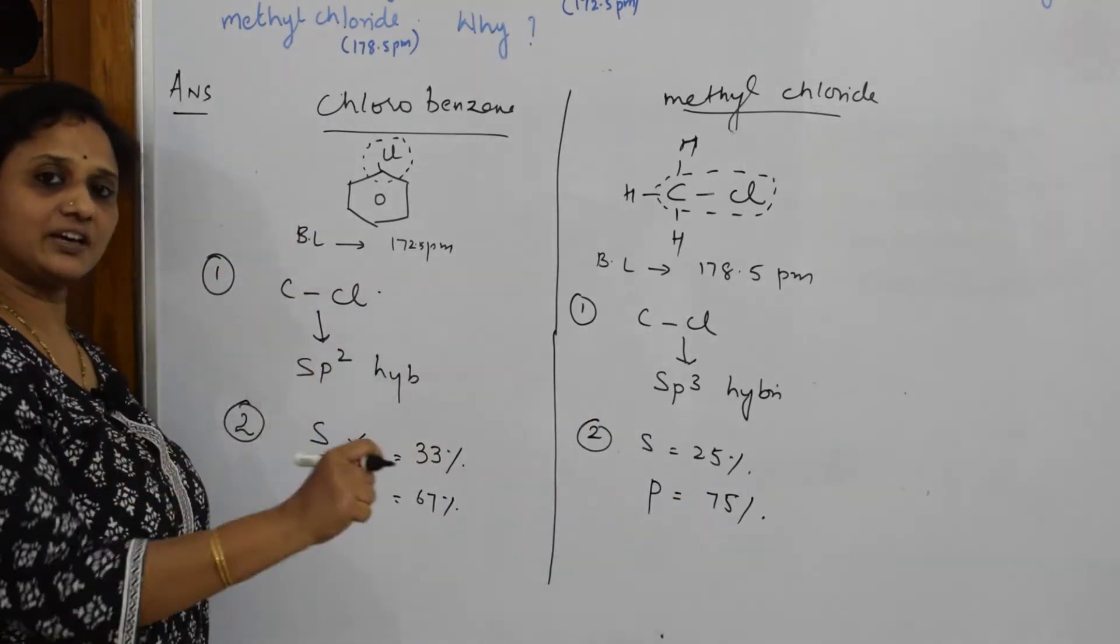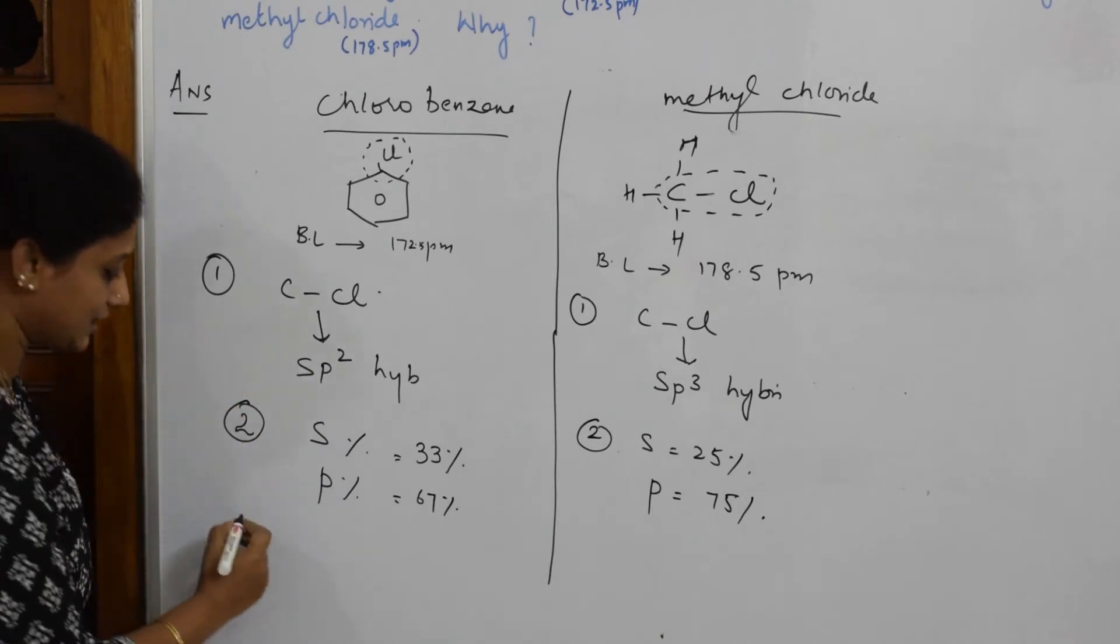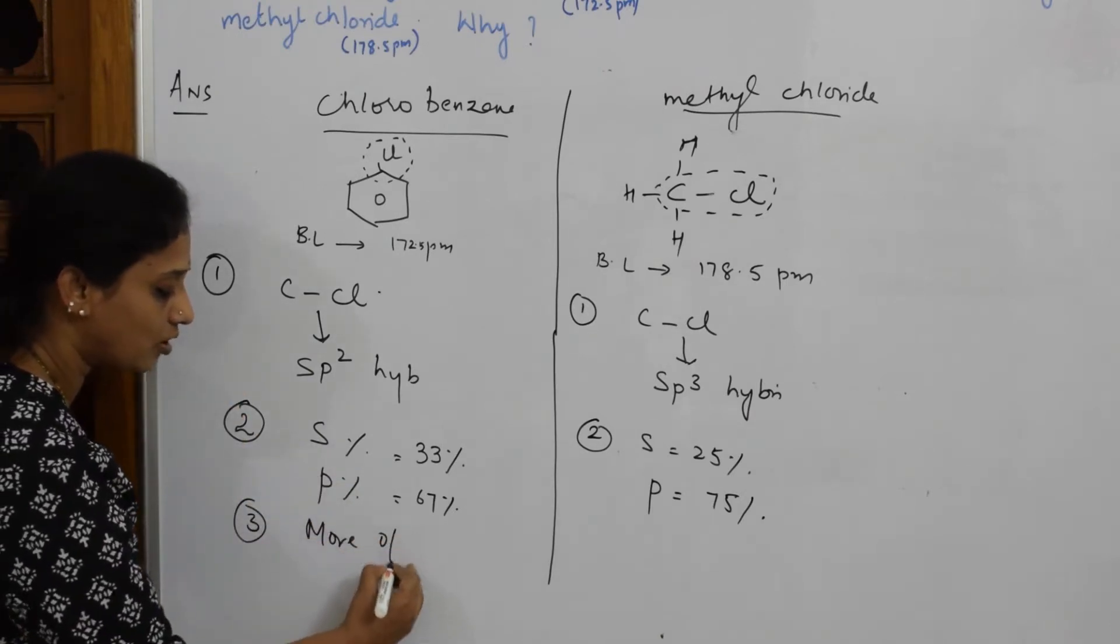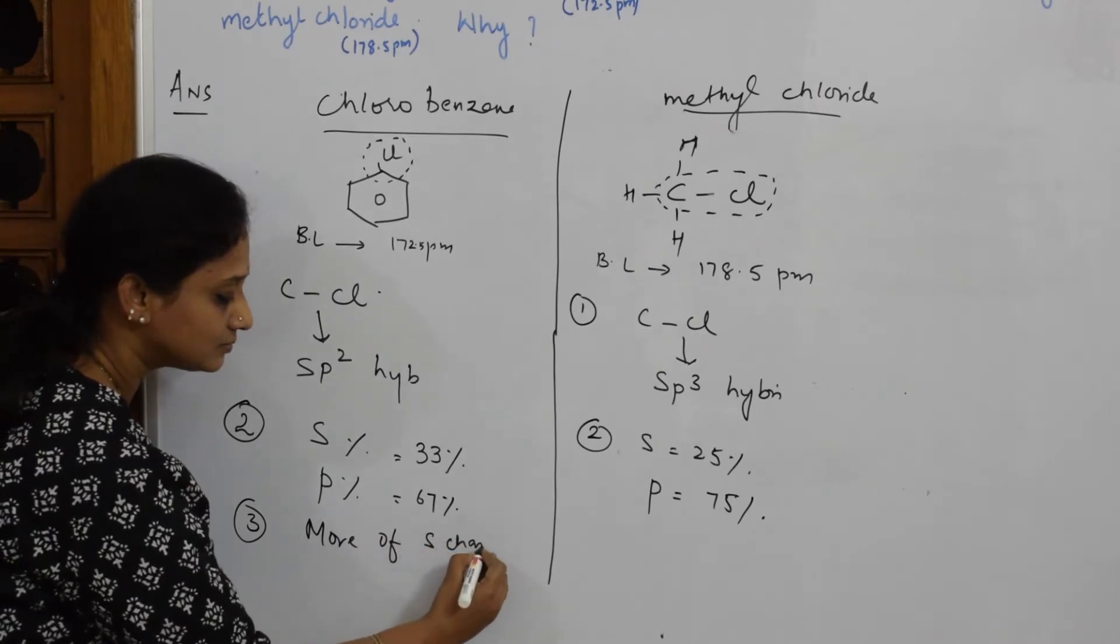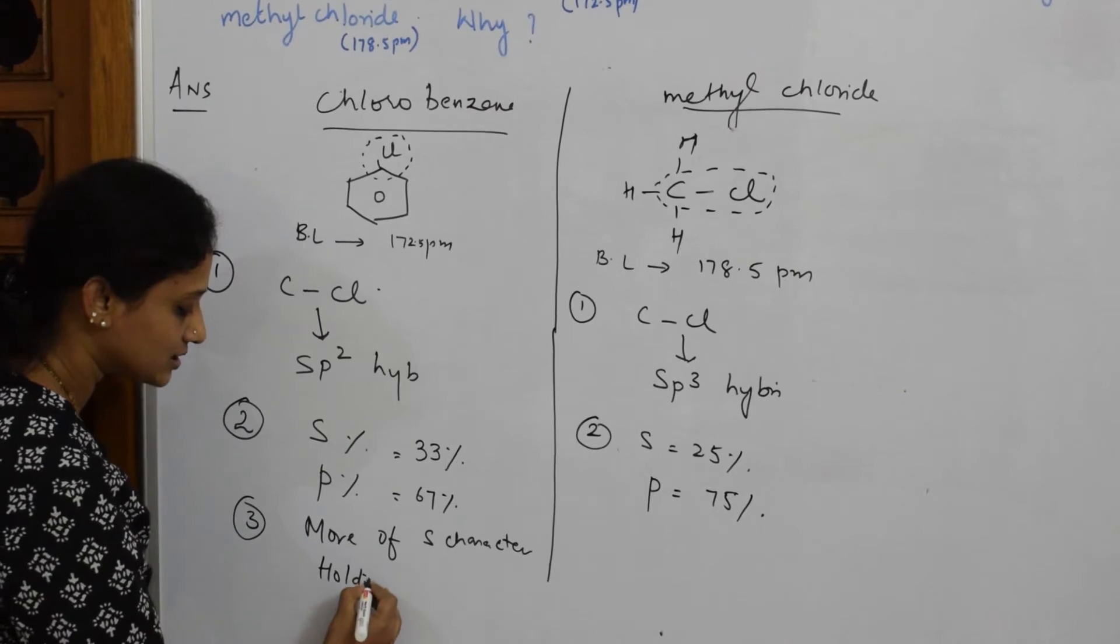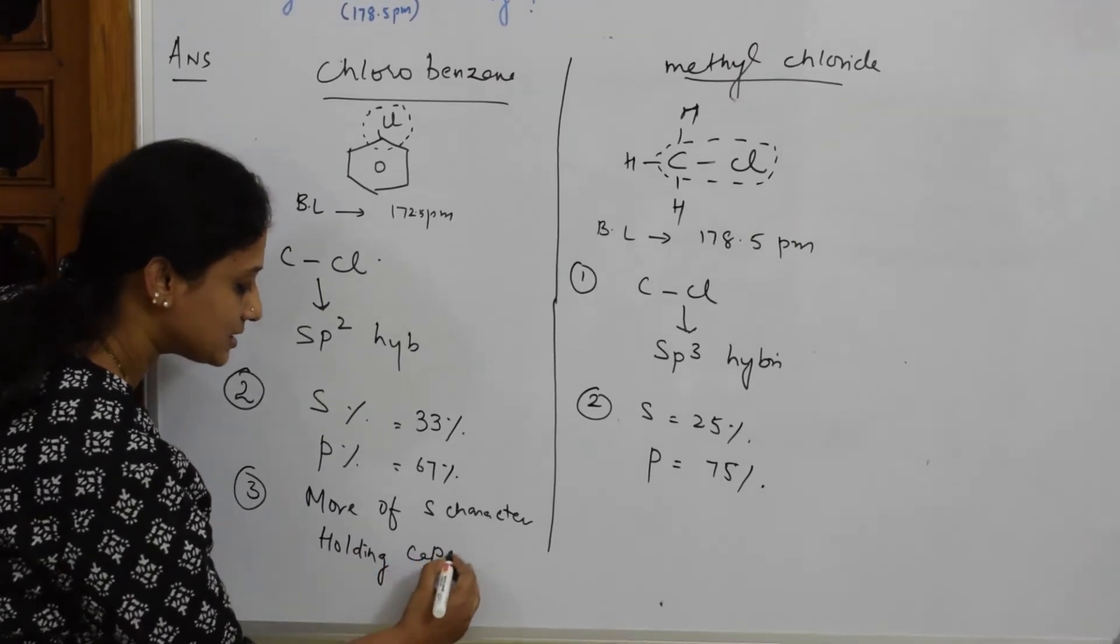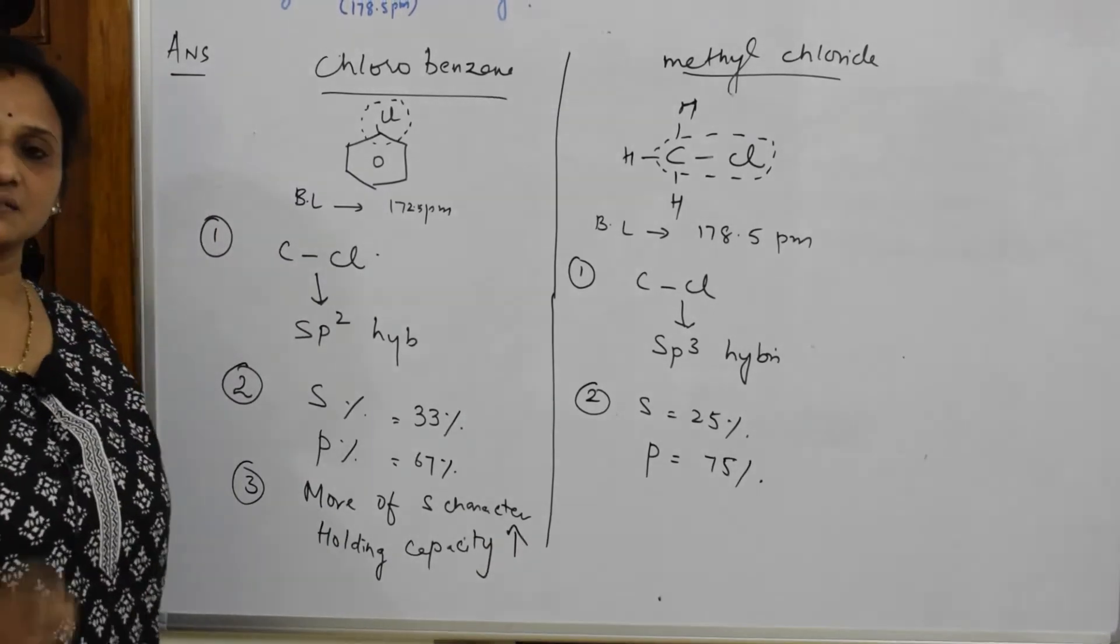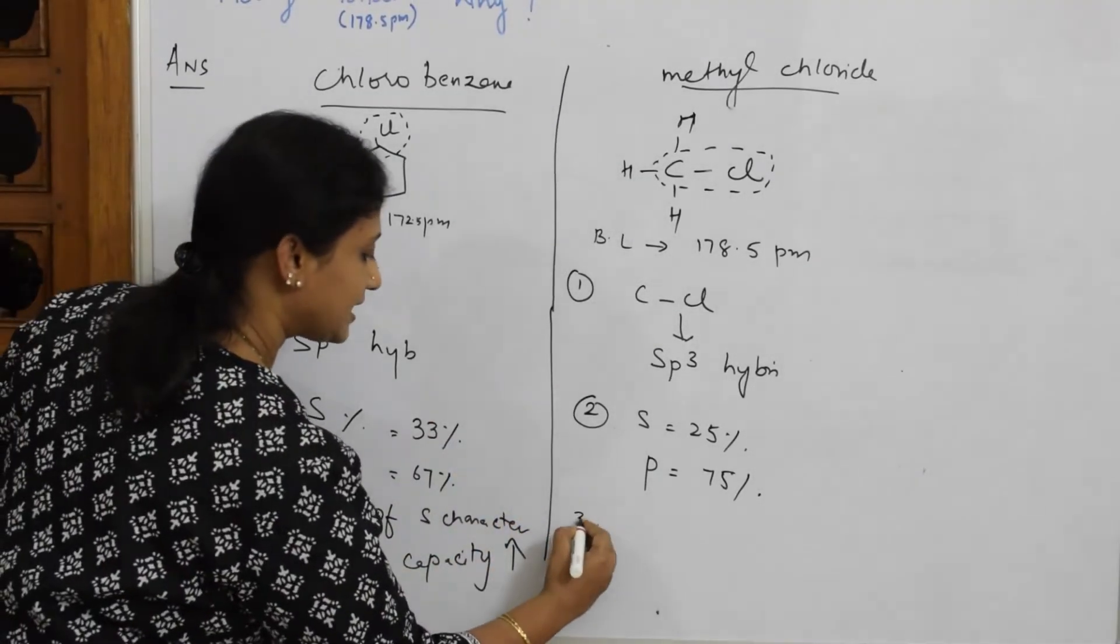Now when I observe both, what are you observing here? Your s character is more here, s character is less. So this is the point where I have to stress clearly: more of s character, holding capacity towards nucleus would be greater. That's the most important point.